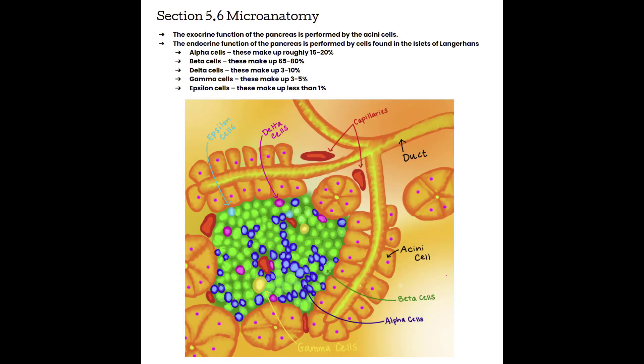Section 5.6, Microanatomy. The pancreas is responsible for both exocrine and endocrine functions; therefore, it is made up of different cell groups that perform these functions. The exocrine function of the pancreas is performed by what we call the acinar cells. 'Acinar' means berries in a cluster — these are the cells that are connected to the ducts within the pancreas, and they produce the digestive enzymes that travel through the ducts to the duodenum.